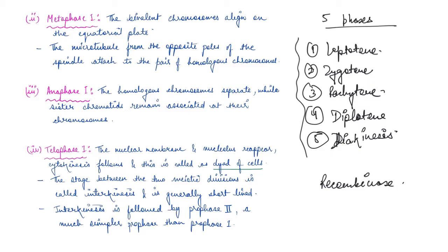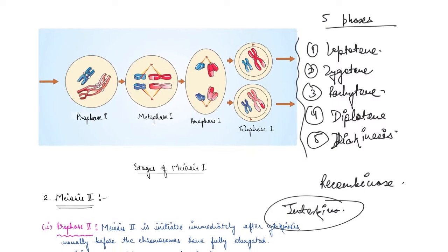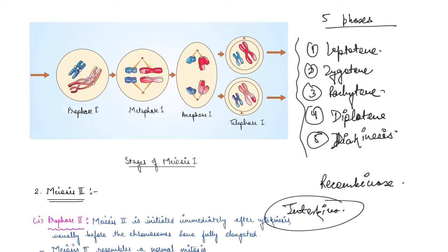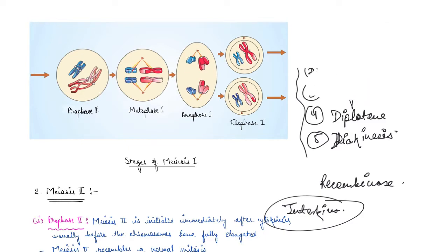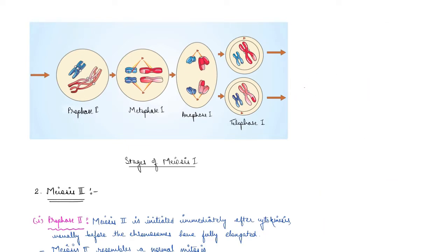The stage between the two meiotic divisions is known as interkinesis, and it is very short-lived. After interkinesis, these cells enter prophase two of meiosis two, which is simpler than prophase one. Let's look at the diagram to see what is happening through meiosis one.